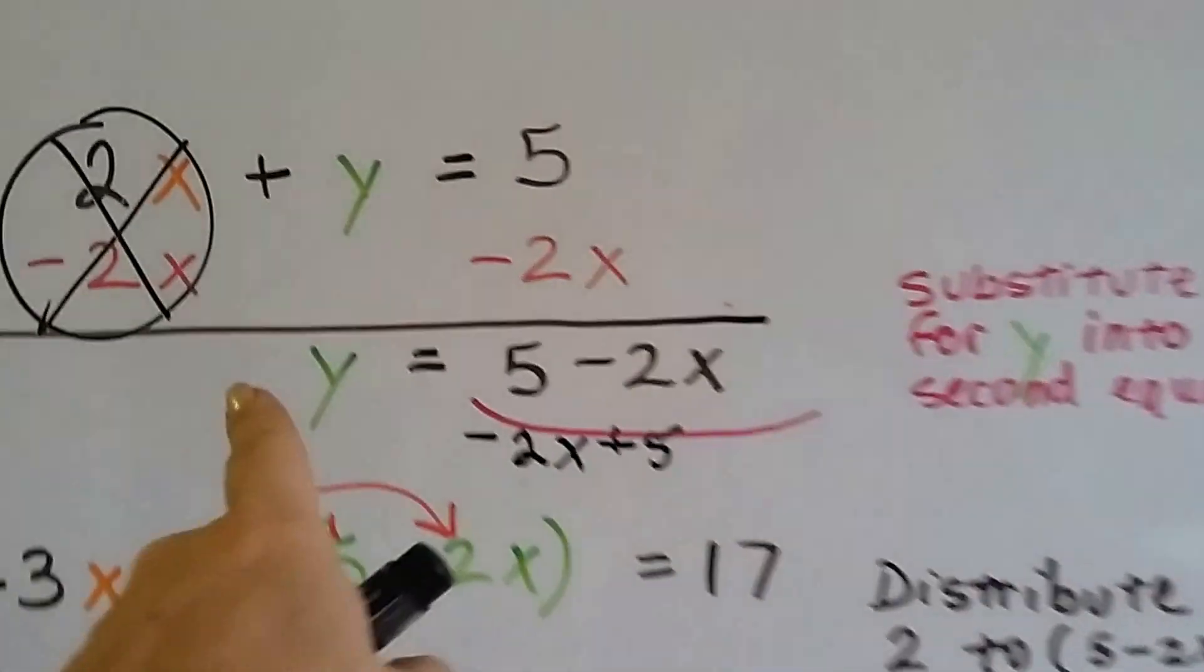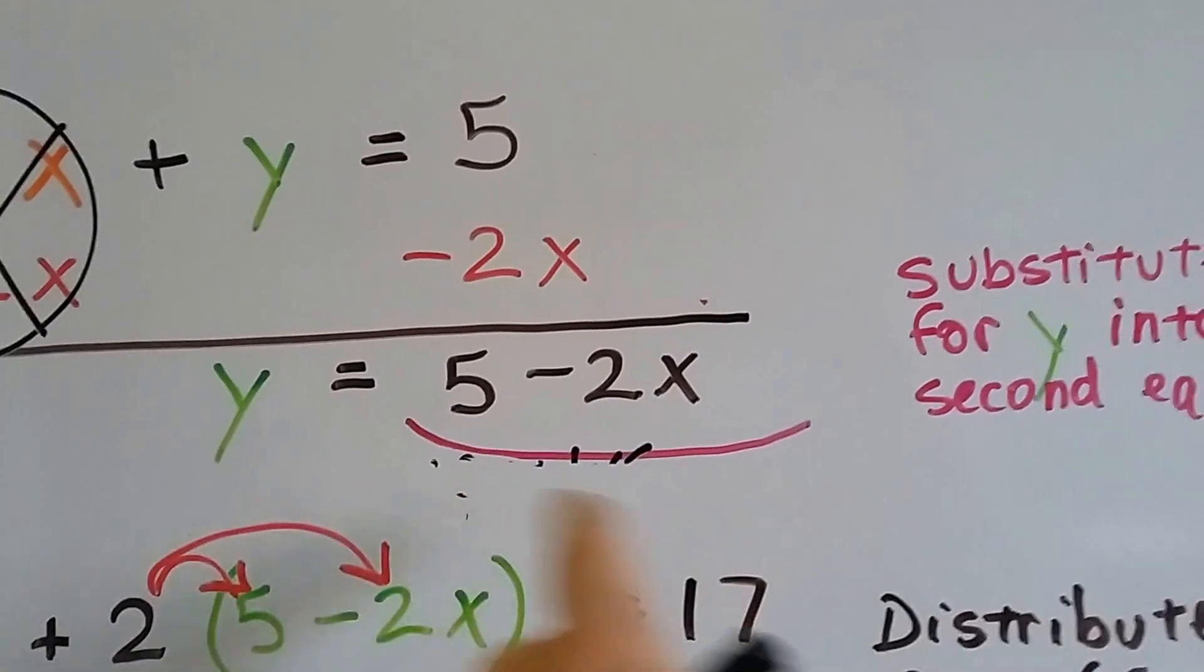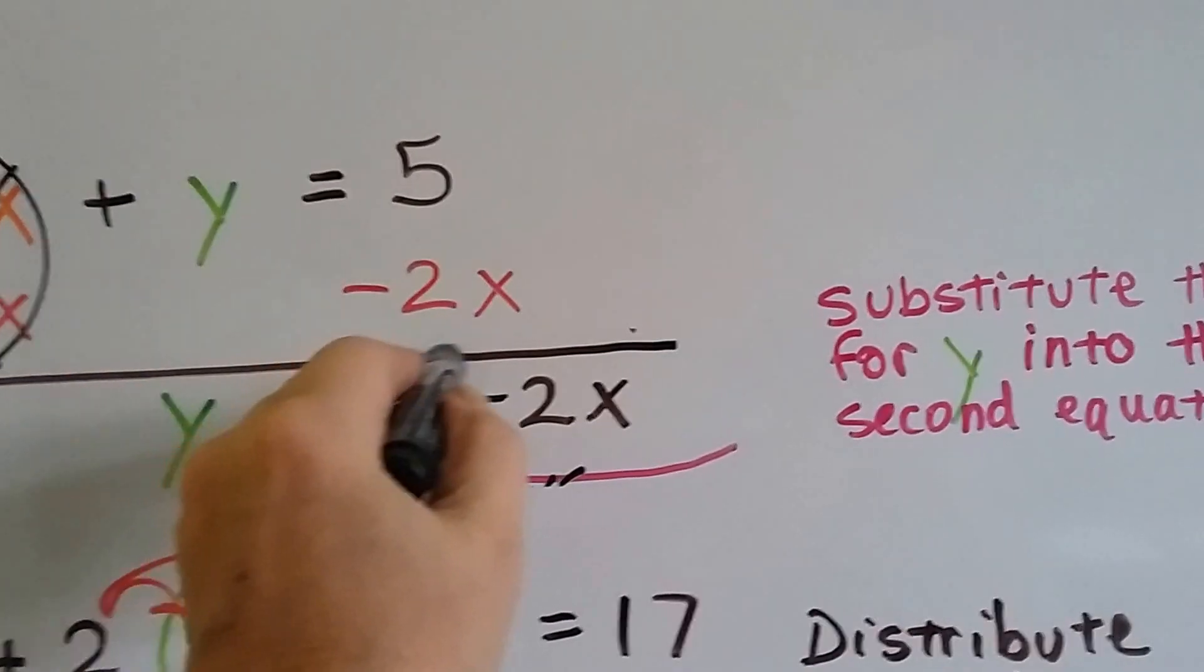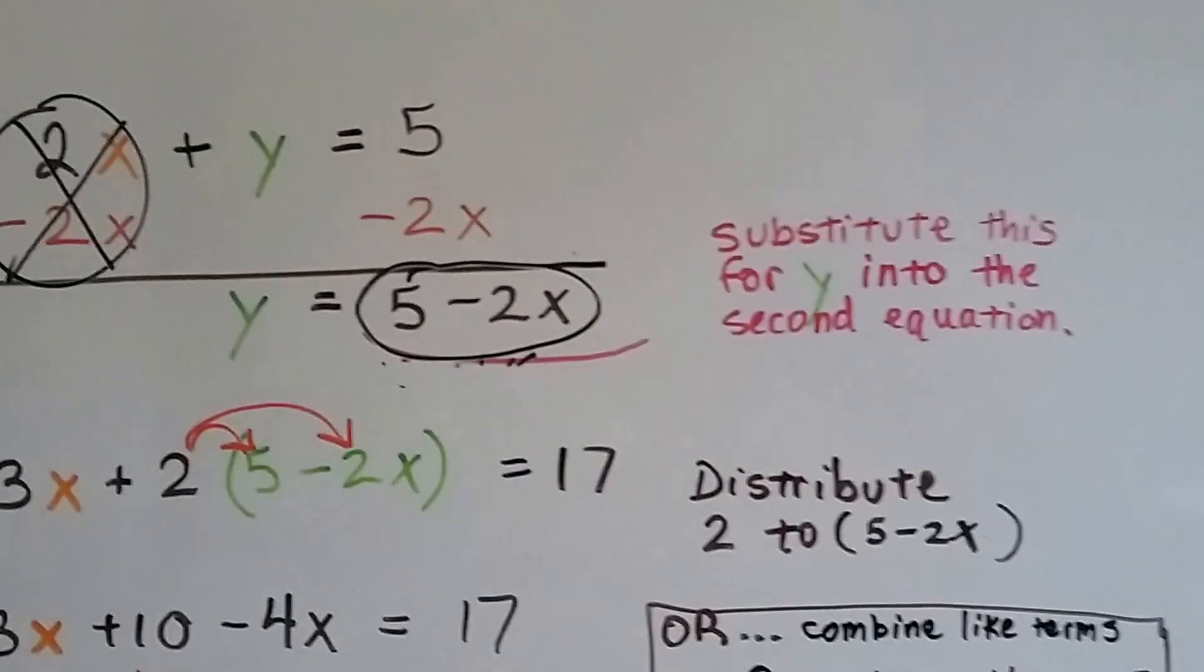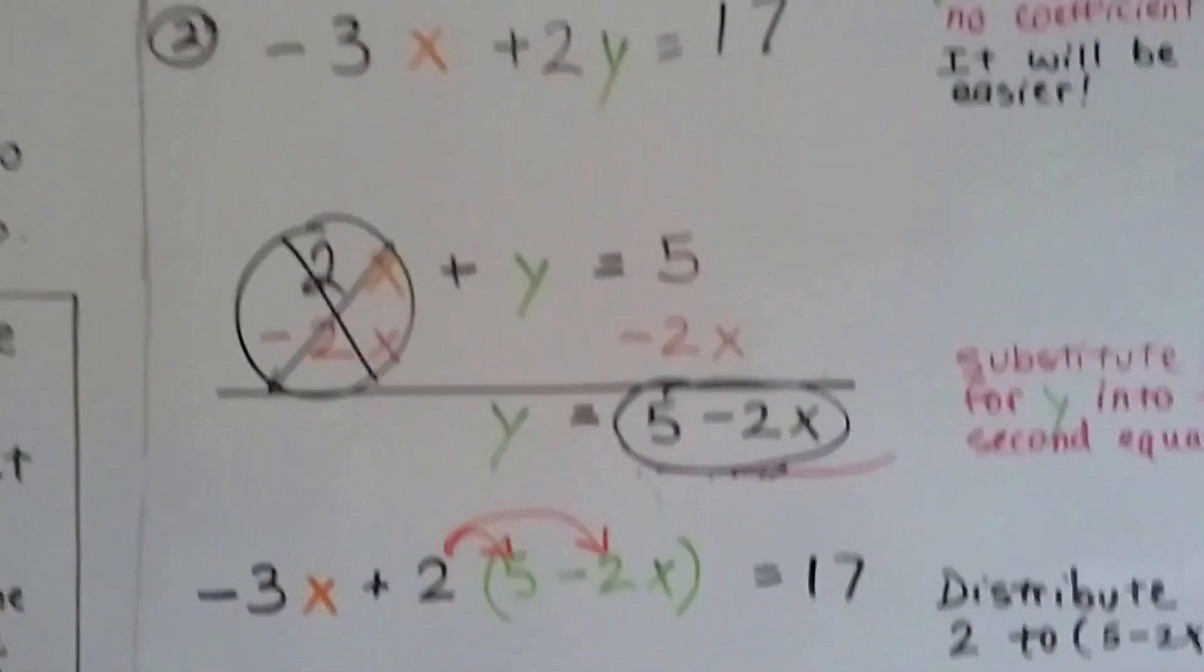So now we know that y equals this 5 minus 2x. This whole thing, that's what y equals. So we're going to use this whole thing and substitute it in wherever there's a y, into that second equation, the negative 3x plus 2y equals 17.